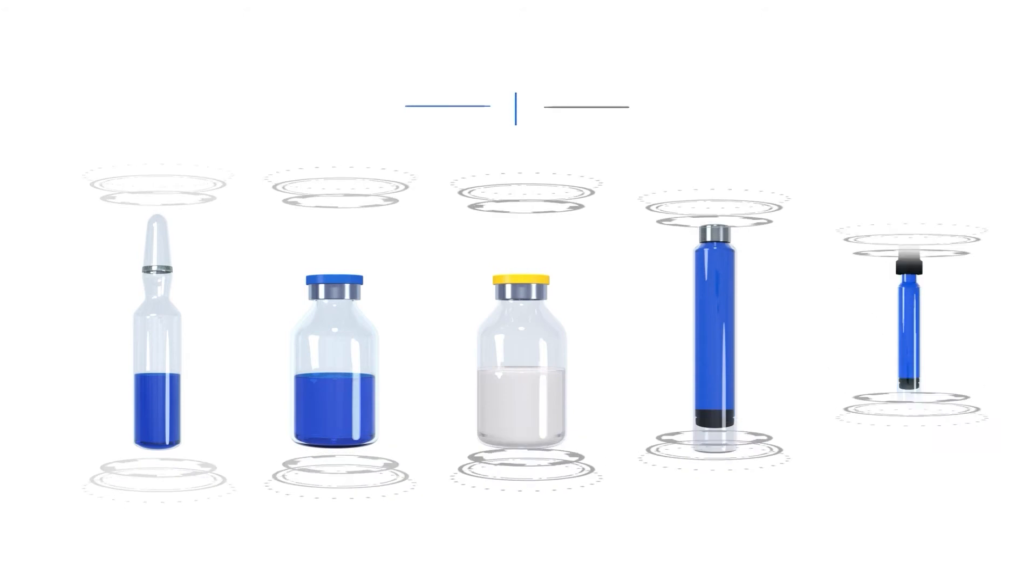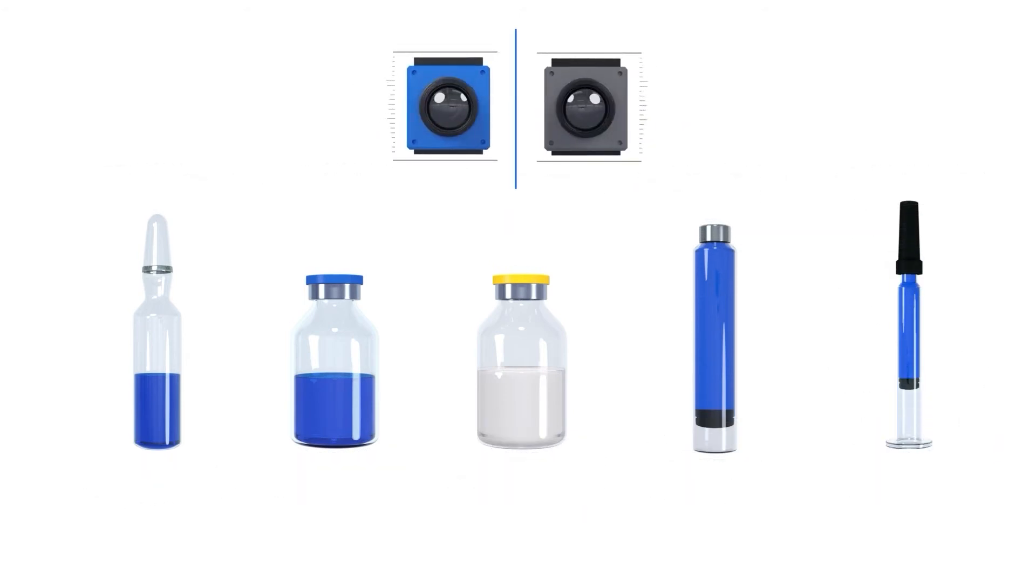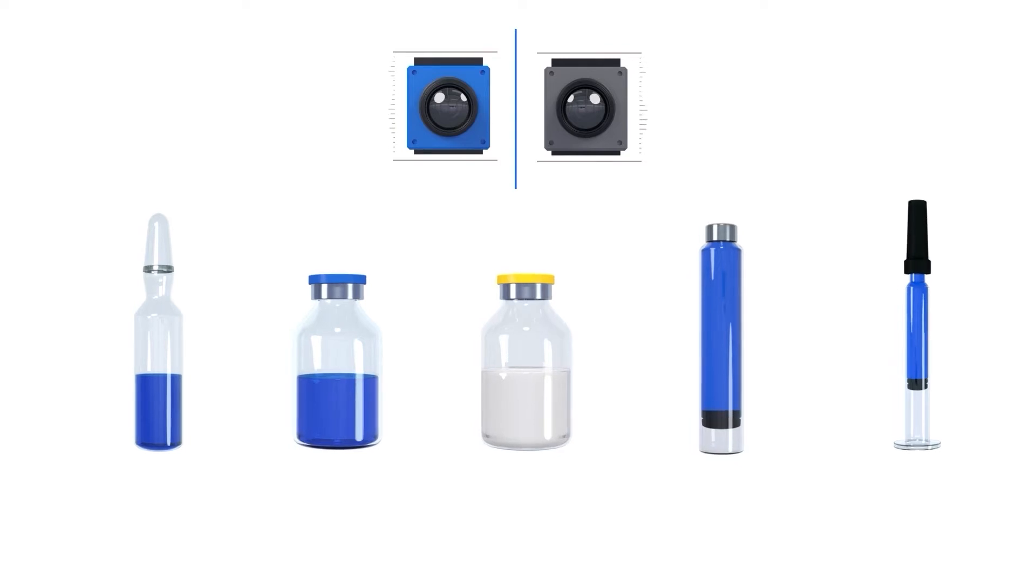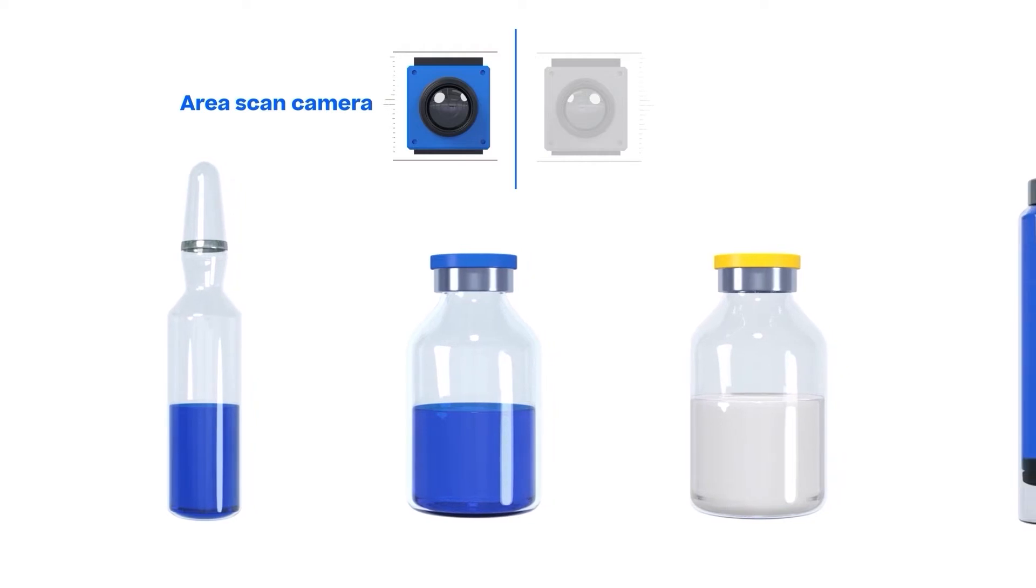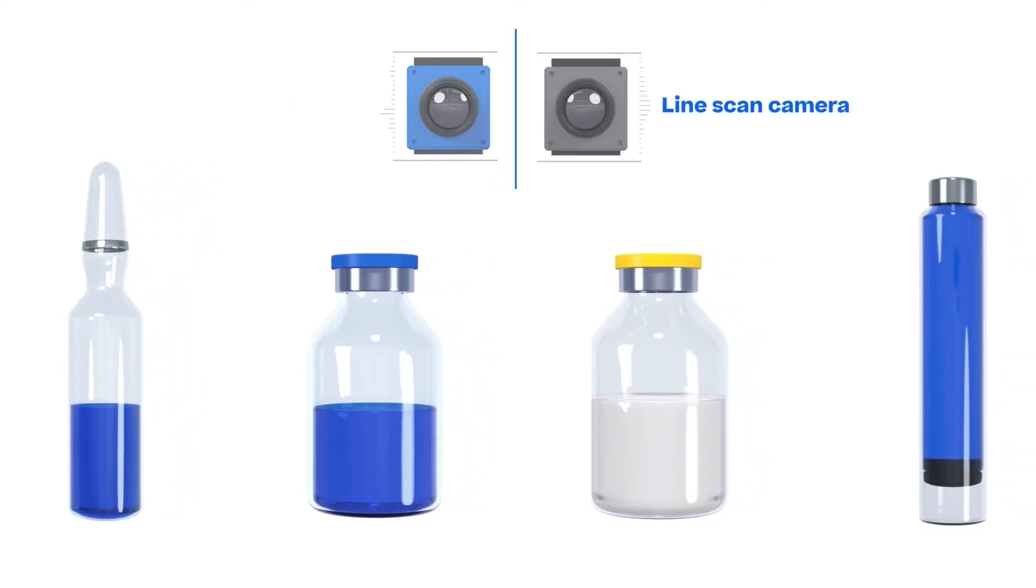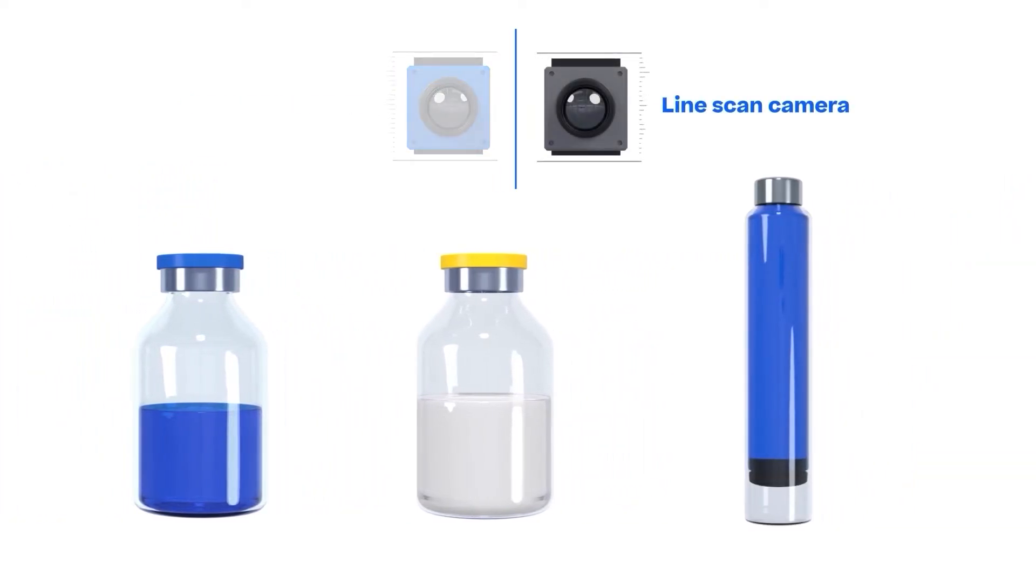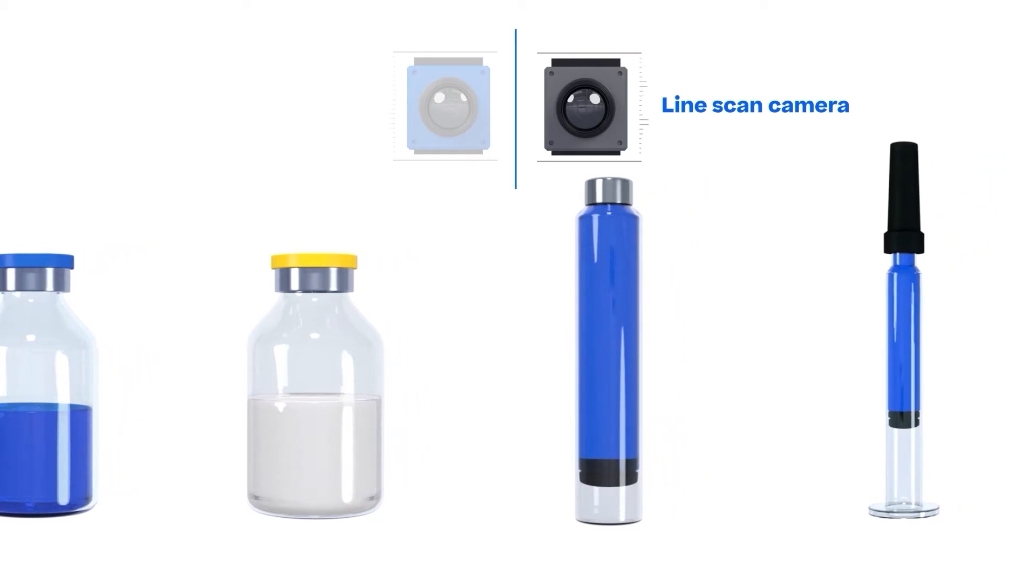Cameras are used for the vast majority of criteria in the inspection of pharmaceutical products. In most cases we employ area scan cameras. If our evaluation of a specific product being inspected concludes that a line scan camera is more appropriate, that type of camera will be used for the inspection.